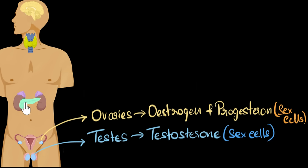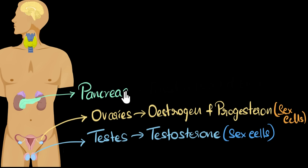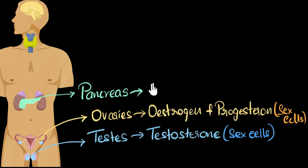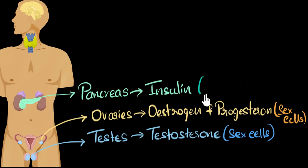The next gland is the pancreas. It secretes an important hormone called insulin, and its major job is to control blood sugar.